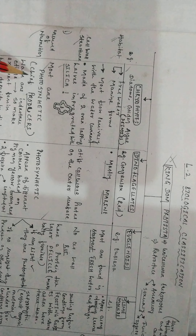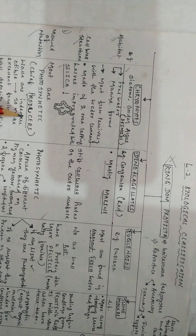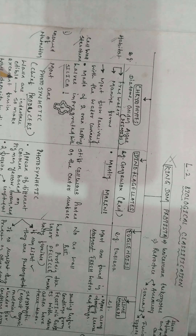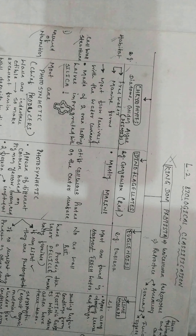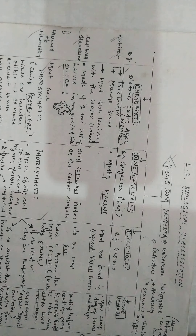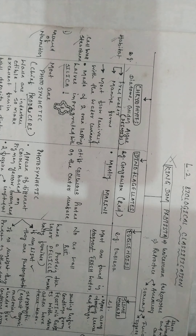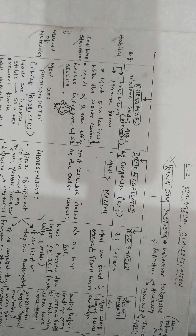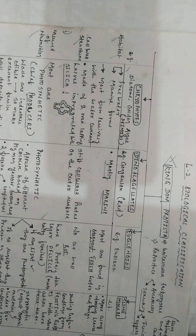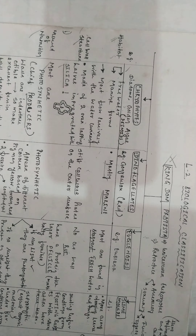Chrysophytes are mostly photosynthetic and are the chief producers. Their walls are indestructible, making them excellent fossils. Wall deposits by diatoms accumulate in soil. Diatoms reproduce so fast that the whole marine area can become diatomaceous earth, which is a form of silica. Economically, chrysophytes are useful in polishing and filtration.